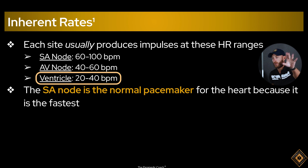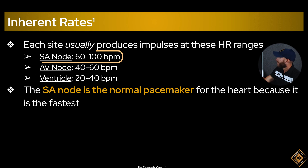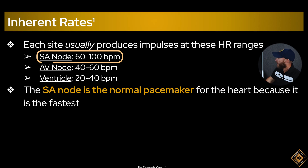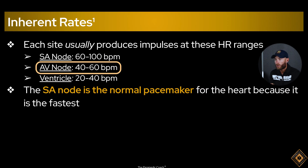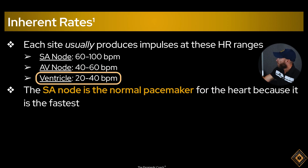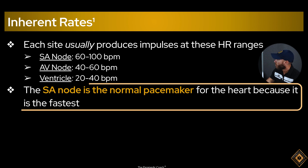To summarize the pacemaker hierarchy: SA node functioning gives you 60 to 100 bpm. SA node fails, AV node takes over at 40 to 60 bpm. Both SA and AV nodes fail, the ventricles take over at 20 to 40 bpm. The SA node is the normal pacemaker of the heart because it's the fastest.